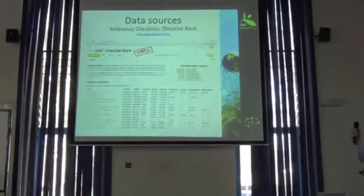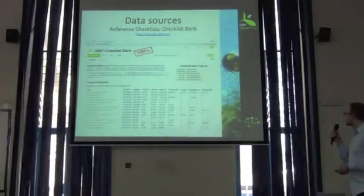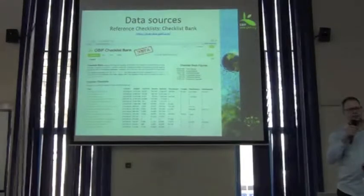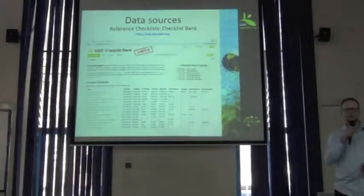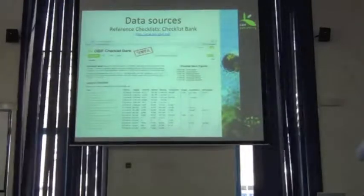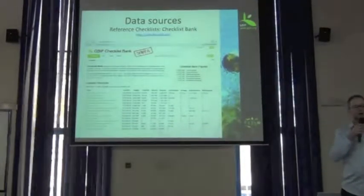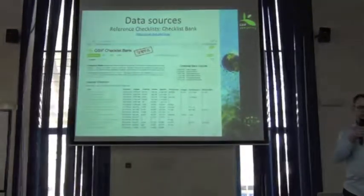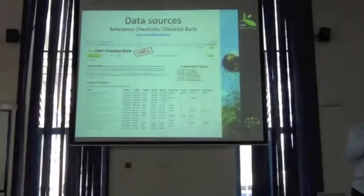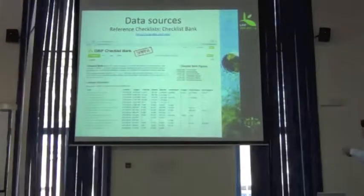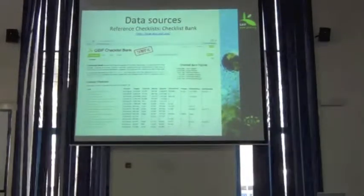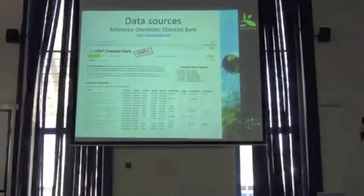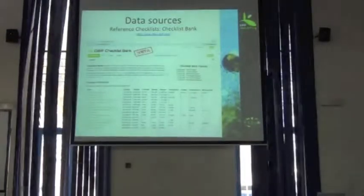One is called the Catalogue of Life Checklist Bank. It currently contains over a hundred very high-quality checklists — reference lists of names that you can use to check whether or not, for example, a marine species matches the WORMS checklist, and whether or not your taxonomic information is correctly described. It's a very rich list, with over 19,000 accepted names.